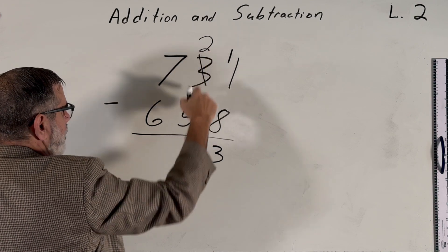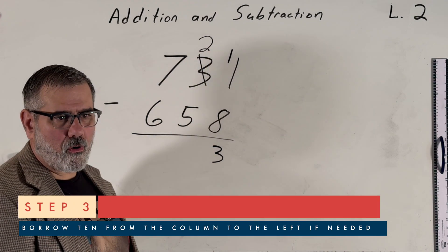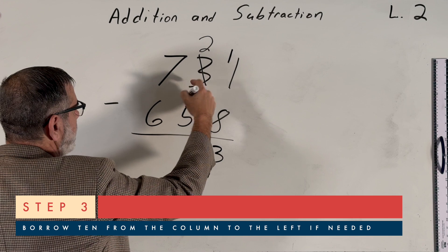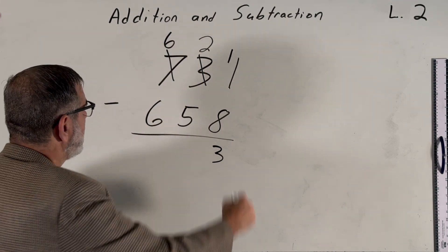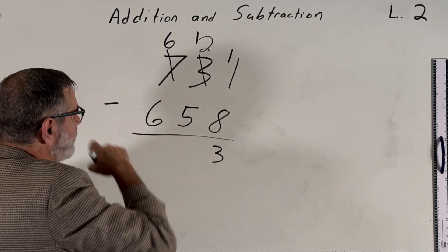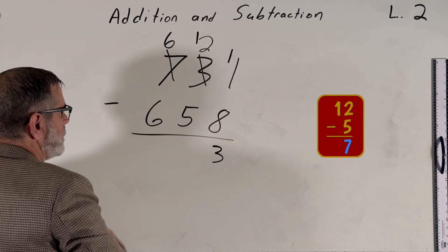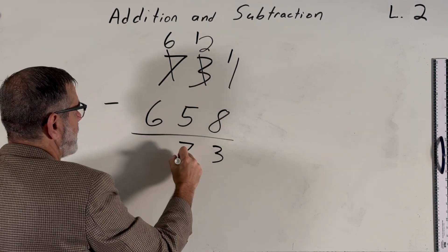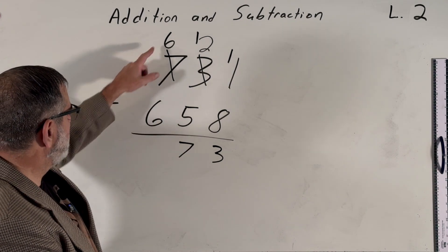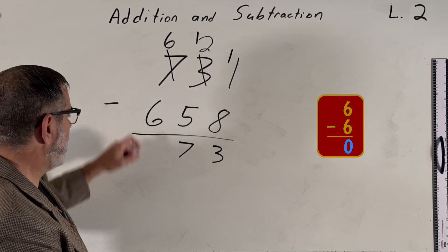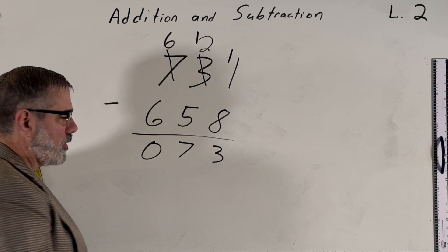Ah, but here we have 2 minus 5, so that's a problem. We're going to have to borrow again from our neighbor. So this time we're going to borrow 100, reducing our number of hundreds from 7 to 6. And we're going to add the 100 back here. So now we have 12 tens minus 5 tens, which is 7 tens. And we move on to the final column. Six minus 6. That's 600 minus 600. That's zero. And we write the zero here.